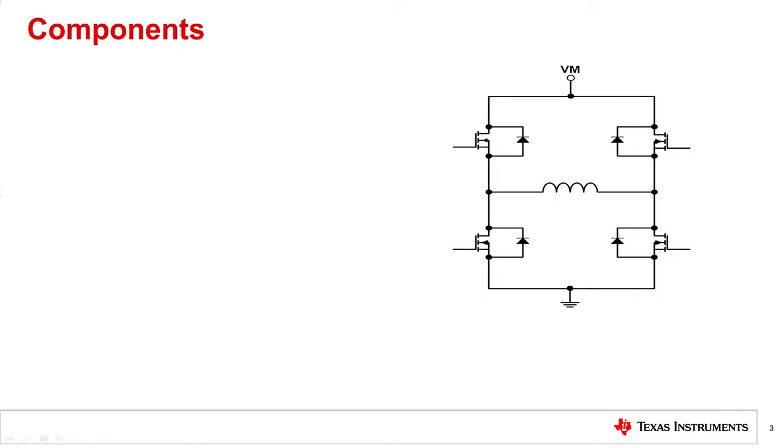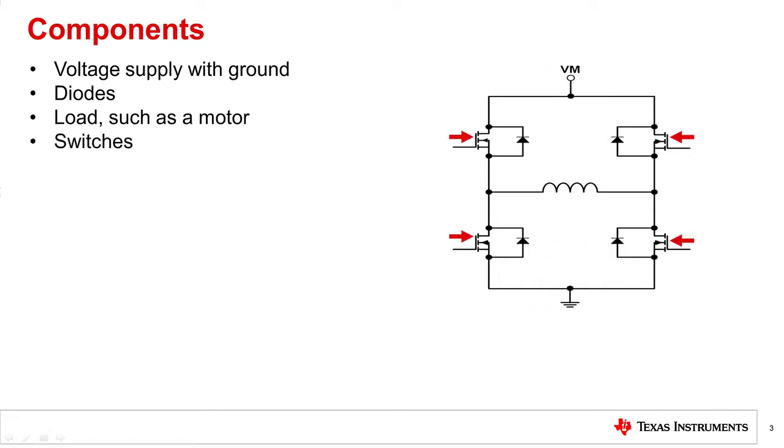Components typically found in an H-bridge circuit are a voltage supply and the ground, diodes which are utilized for current recirculation and current decay. These diodes are typically the body diodes of the FETs, a load such as a brushed DC motor, and four switches such as transistors.